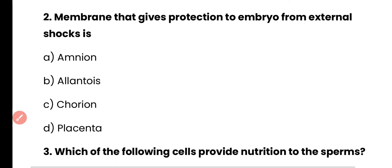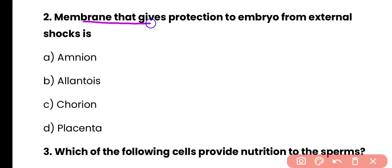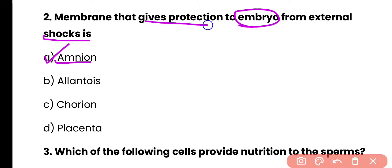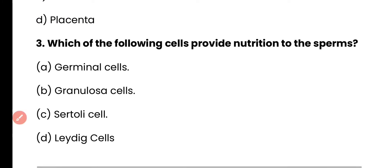Question 2: Which membrane gives protection to the embryo from external shocks? Options: amnion, allantois, chorion, placenta. Correct answer is option A. The amnion immediately surrounds the embryo when it is first formed and contains amniotic fluid that acts as a shock absorber, giving protection to the embryo from external shocks.